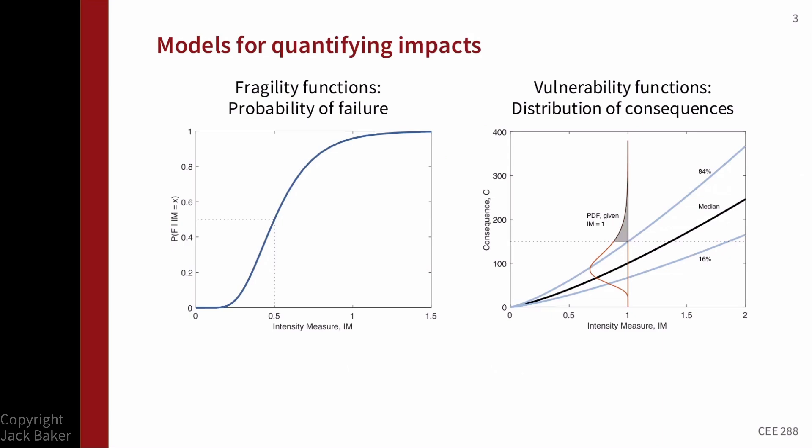I'm going to set up a couple of basic definitions for models to quantify these consequences. On the left-hand side, we're thinking about cases where we've got binary or discrete outcomes. The easiest thing to think about is a binary outcome — either we have a failure or we don't. The model needs to characterize the probability of failure. On the horizontal axis, we'll have some metric of ground shaking intensity via an intensity measure, and on the vertical axis this function tells us the probability of failure given that intensity measure.